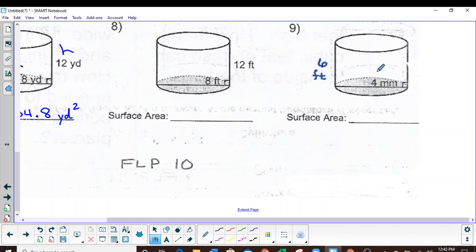Number nine, I have a diameter of four. So I'm going to change that to a radius of two. That's the only tricky spot that'll get you in trouble if you forget to change that. Here's my height of six.